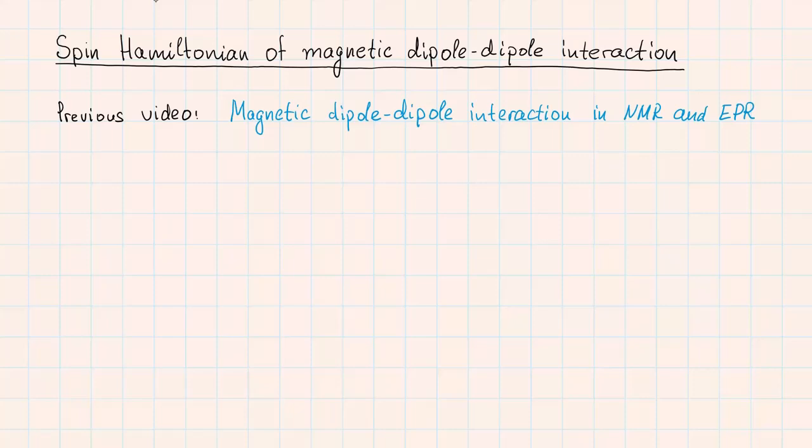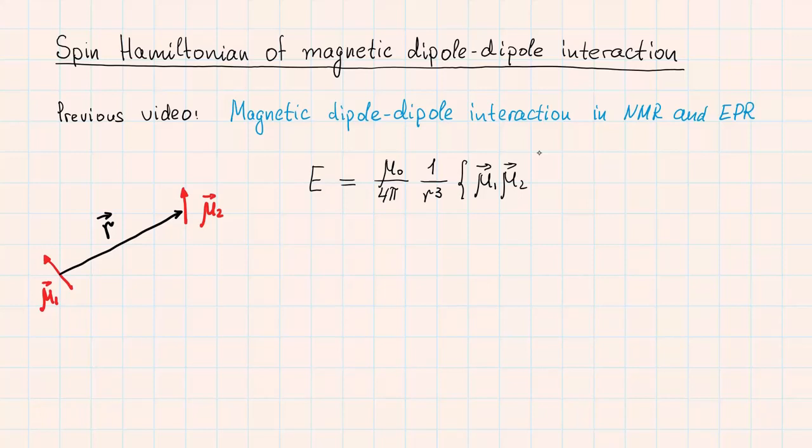Basically, I have derived the formula which gives the energy of interaction between two magnetic moments mu1 and mu2 separated by a distance vector r. This energy is equal to mu0 divided by 4π multiplied by r to the power of minus 3 and multiplied by an expression in parenthesis, which is scalar product of mu1 and mu2 minus 3 multiplied by scalar product of mu1 and r multiplied by scalar product of mu2 and r and divided by distance vector squared.